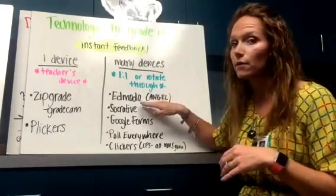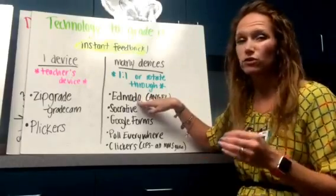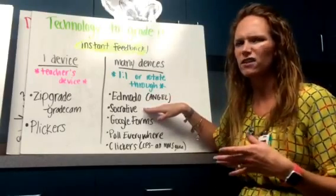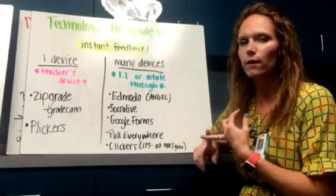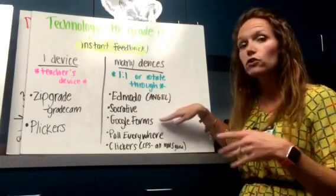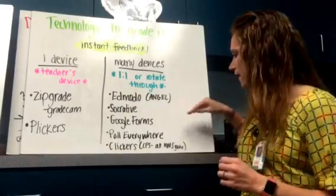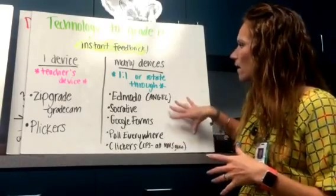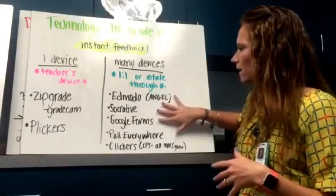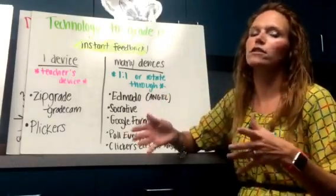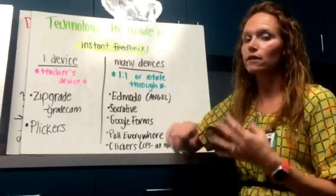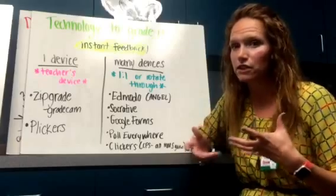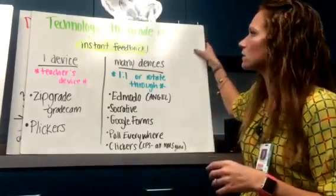Then there are the many-devices options. I love Edmodo — you can use Angel too, but Edmodo is more user-friendly and the reports it generates are beautiful. Another program I used was Socrative — there's an app version and a web-based version, so it works on any device. You can also use a Google Form, and Poll Everywhere is another website I really like. Clickers are another option — the Media Center has sets of them. For Clickers you want one-to-one, but the rest of these you can also have students rotate through. A five-question quiz takes at most 15 minutes, and really it shouldn't take that long since these are short, specific questions.